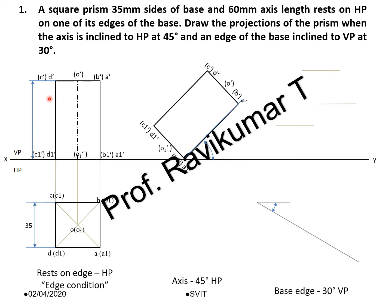If you observe the naming here — if you are looking from the bottom of the object, only A1 is visible but B1 is invisible, so A1 dash is visible and B1 is invisible. Similarly, D1 is visible but C1 is invisible when looking from top or bottom. A is visible, B is visible, C is invisible, and D is visible. This is the naming — this is the first position.